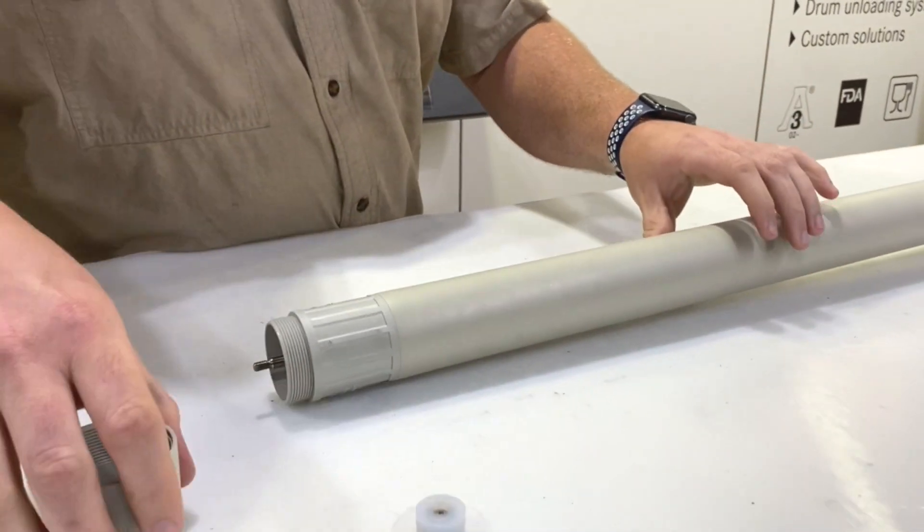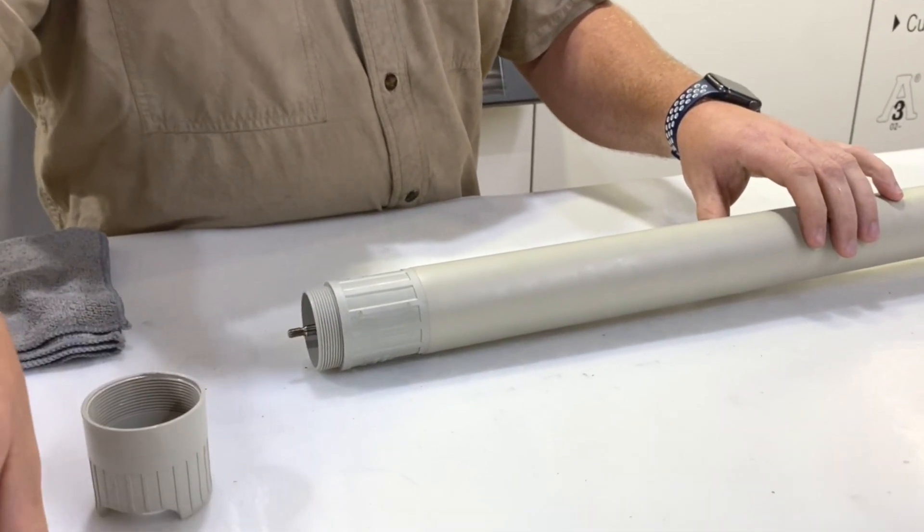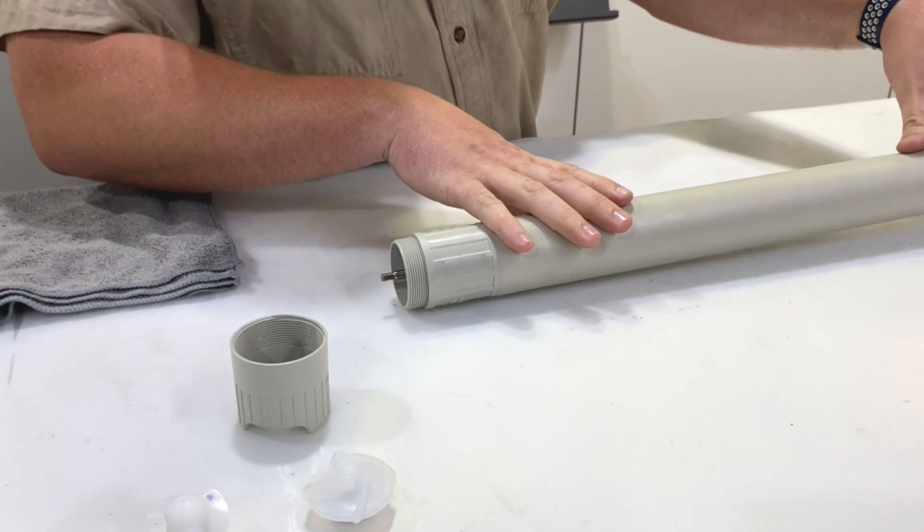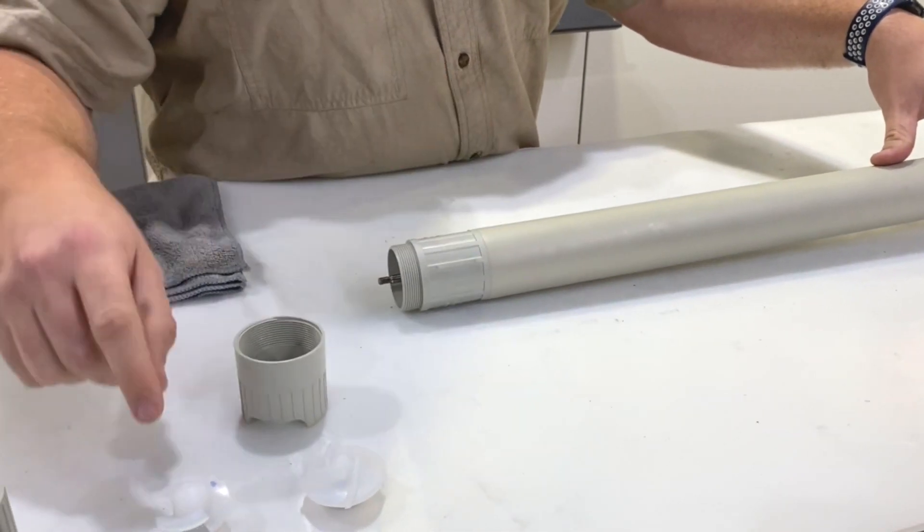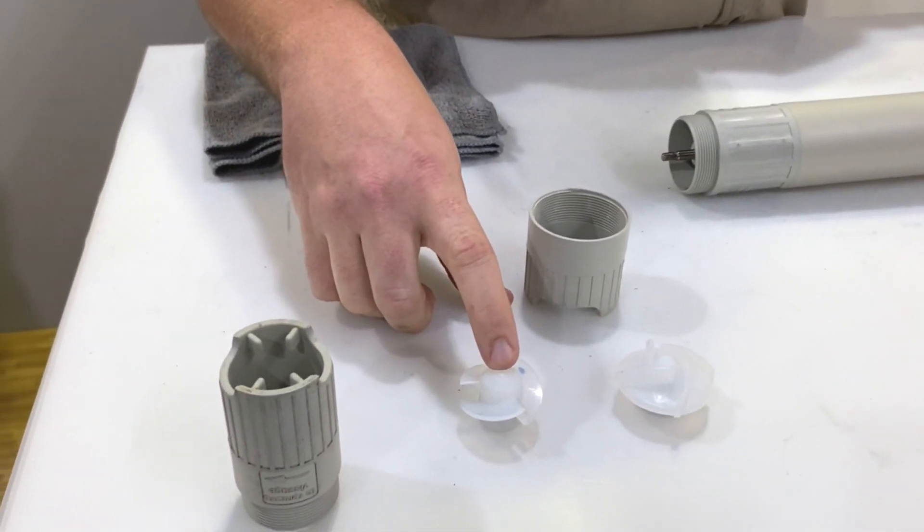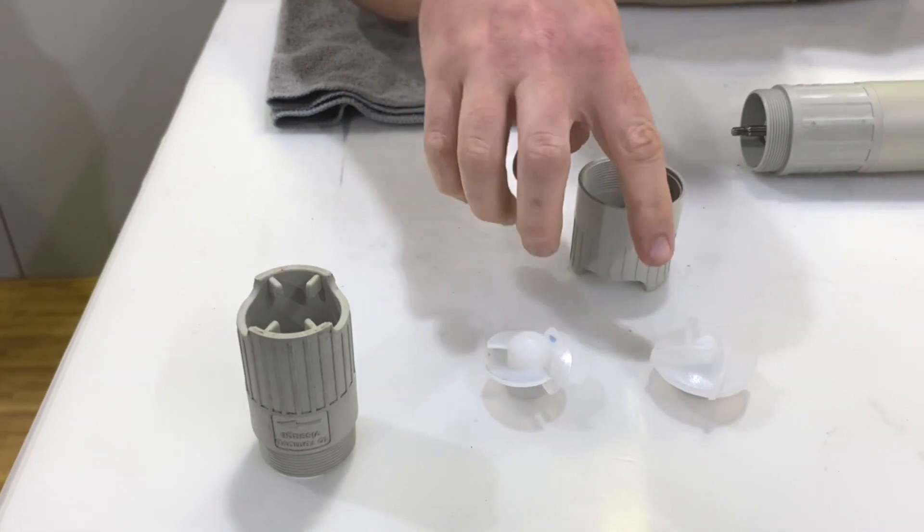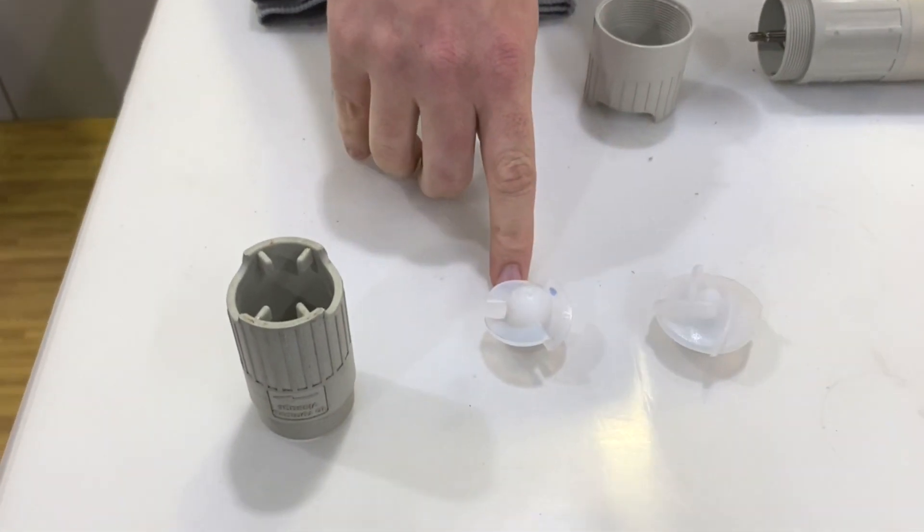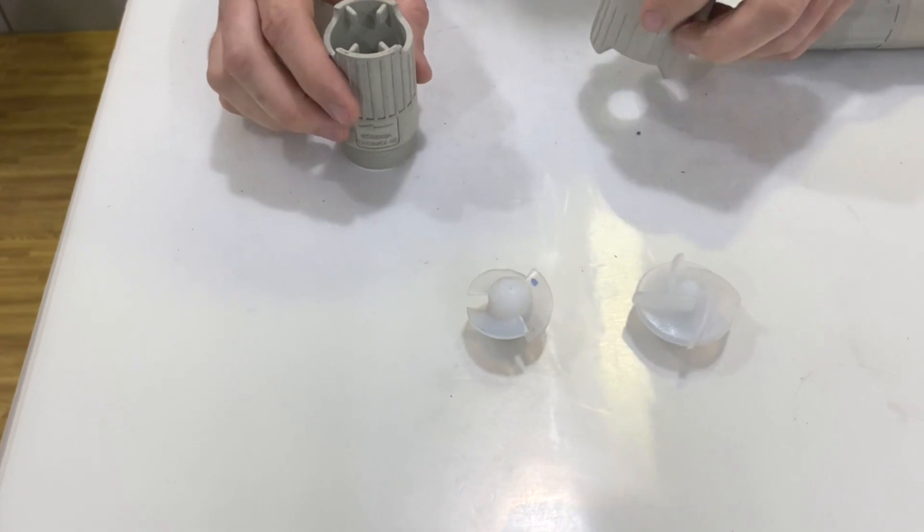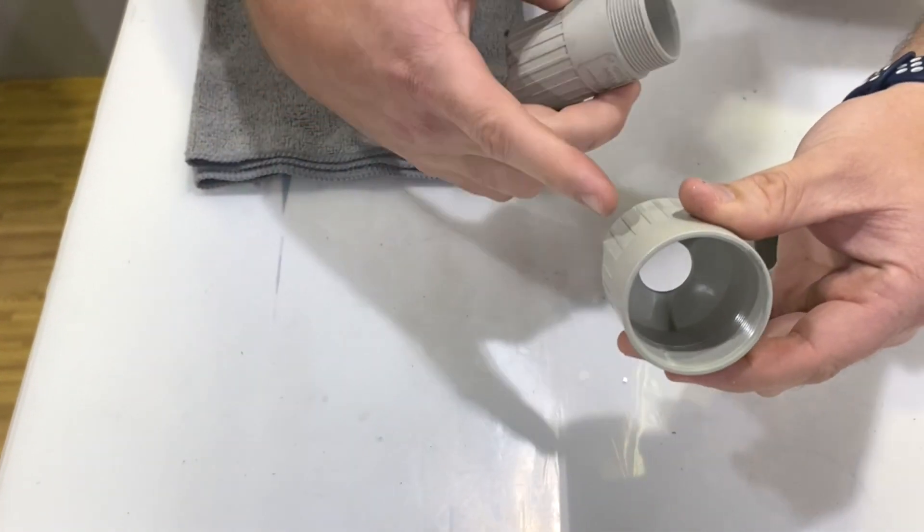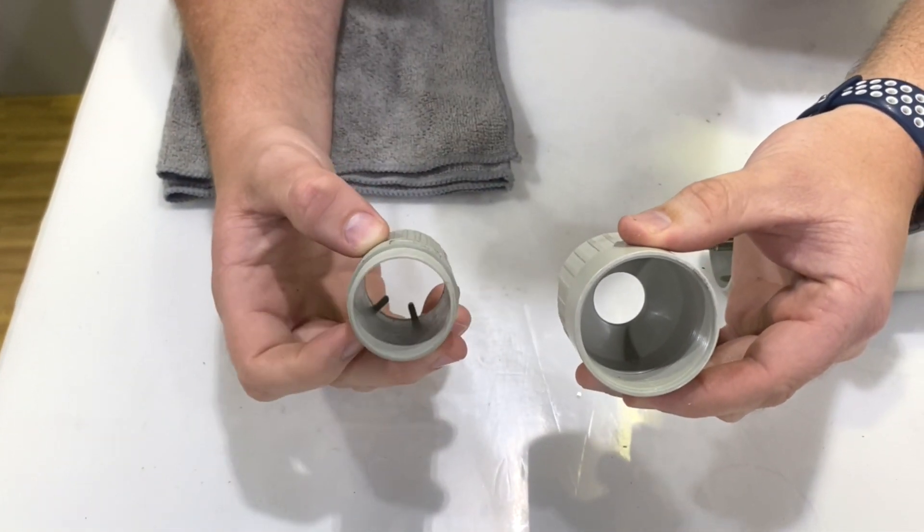And then before we reinstall the foot piece and impeller, this is the Z version for high head applications. And then we also have a standard impeller. You can see the difference here, this is the Z style, this is the standard. And then the foot pieces are also different. You can see the Z style foot piece and the standard foot piece here.